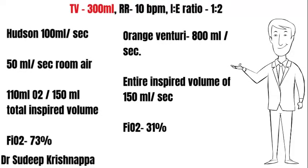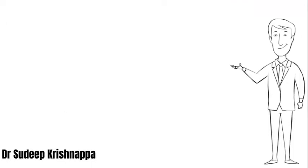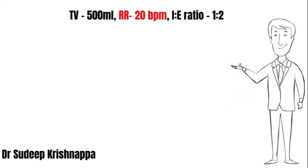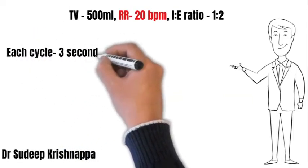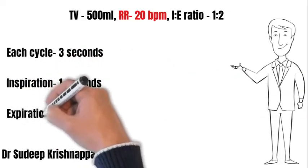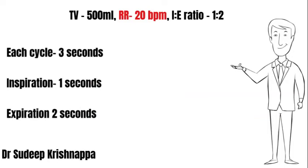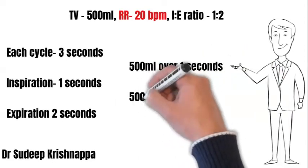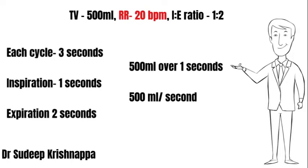Moving to the next scenario: we keep tidal volume at 500 mL but change the respiratory rate from 10 to 20 breaths per minute, keeping the I:E ratio at 1:2. Each cycle drops from 6 seconds to 3 seconds. With I:E ratio of 1:2, the 3 seconds splits to an inspiratory duration of 1 second and expiratory duration of 2 seconds. The tidal volume of 500 mL now must be breathed in over 1 second, giving a flow rate of 500 mL per second.